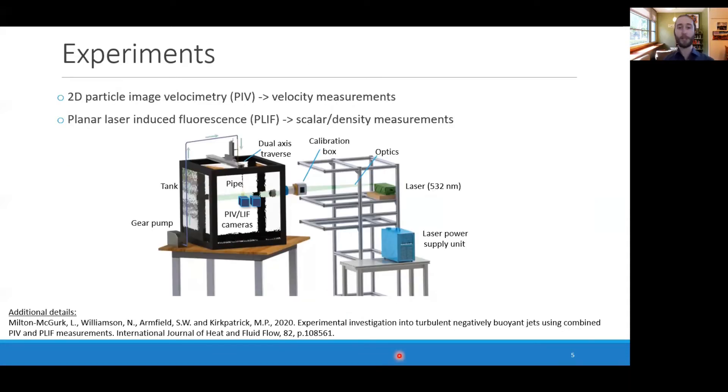We are taking an experimental approach to gather data on this flow. We're using two-dimensional particle image velocimetry and laser-induced fluorescence. This will give us velocity and scalar measurements. This is a schematic of our experimental setup. We have a few cameras over here, a calibration box that lets us correct for variations in laser power, and a large 1,000 liter tank here where we inject fluid above into the main tank.